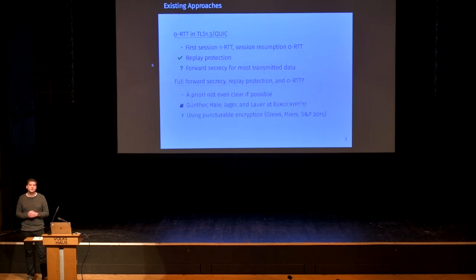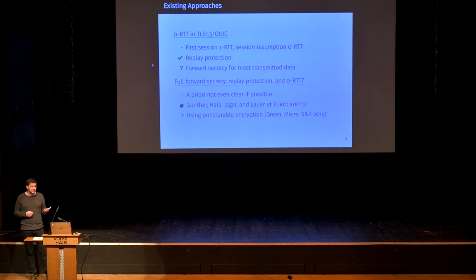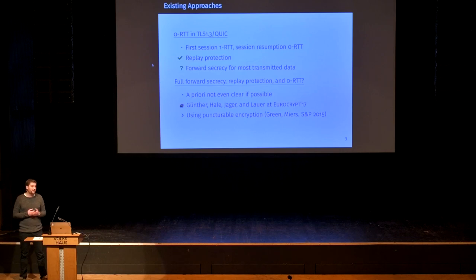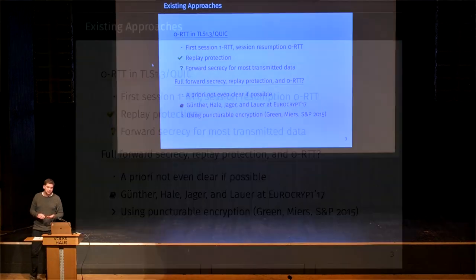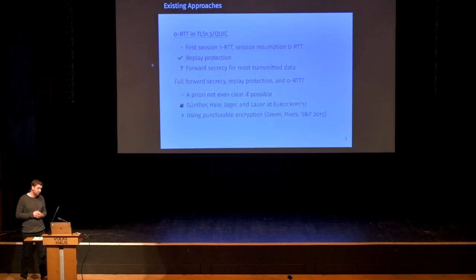What we want to achieve is forward secrecy for all messages, at the same time replay protection and zero round-trip time. For a long time it wasn't even clear if such a thing even exists. But there was a really nice work last year at Eurocrypt by Günther, Hale, Jager, and Lauer. They basically showed that you can indeed achieve those properties simultaneously by relying on a primitive called puncturable encryption, which is due to Green and Mears.